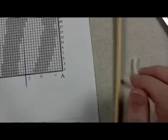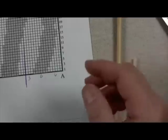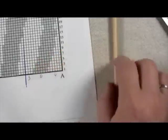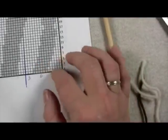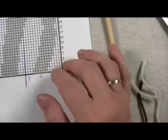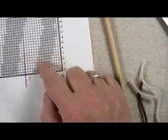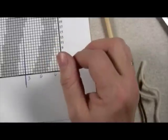Intarsia is a technique of color work that you use when you have big blocks of color. You don't want to strand the yarn all the way across as you would in fair isle because it would bunch up, use a lot of extra yarn, and not be nearly as clean as when you use one ball for each of these colors and twist them together.